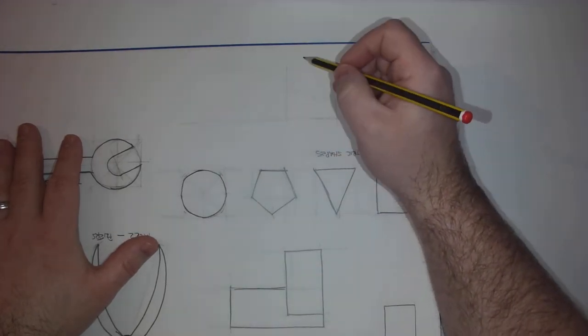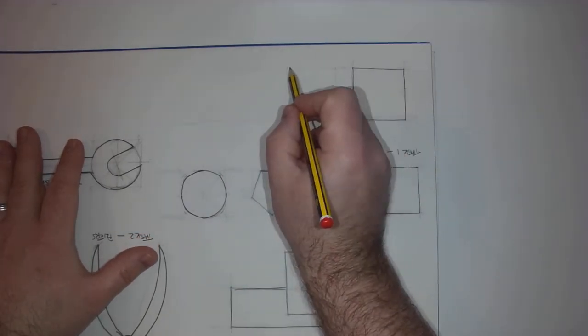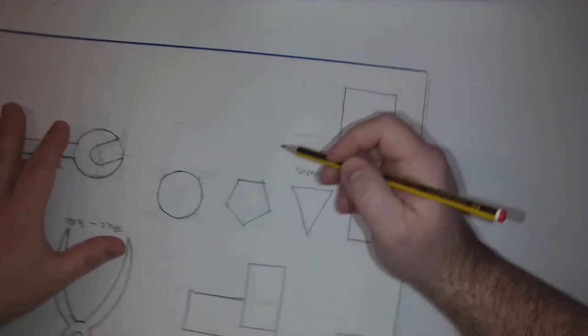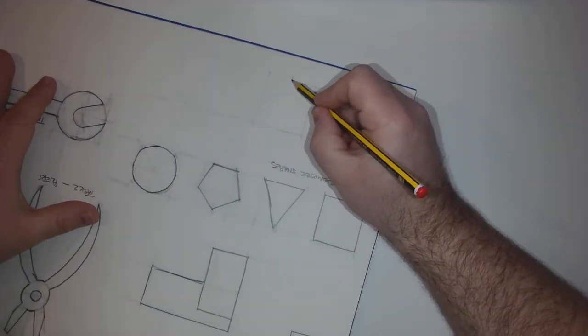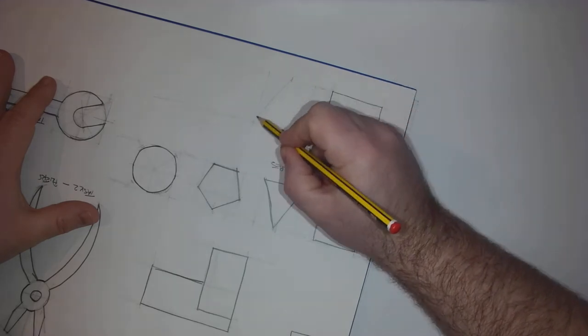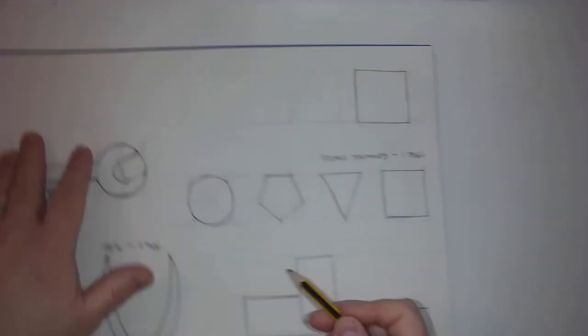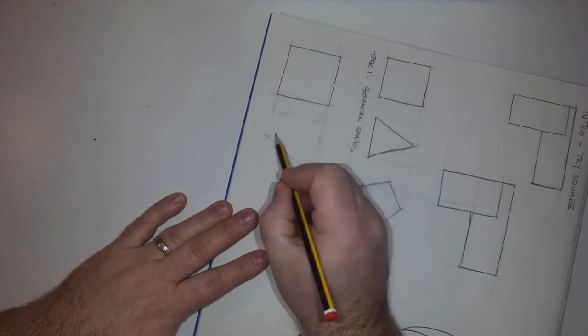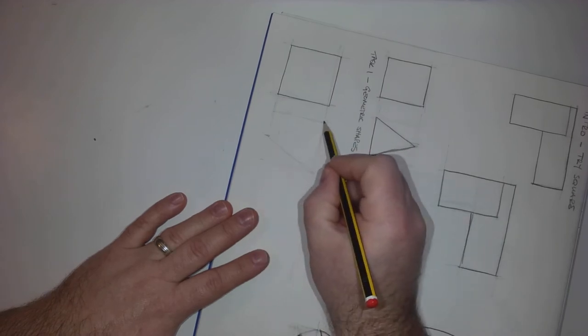And for the apex of the triangle, between here and here, I'm going to estimate where halfway along is, turn my page, and then I can construct in light lines from that point down to that corner, and similarly, from this point down to that corner.